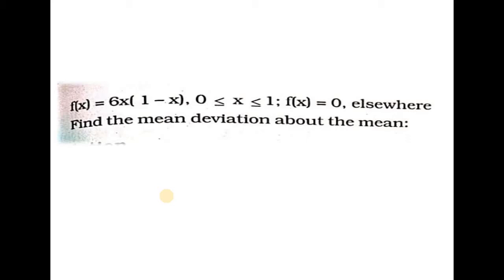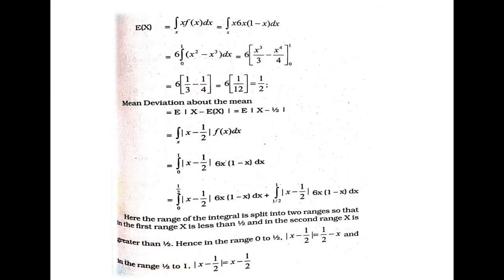f of x is defined from 0 to 1. The value of f of x is 0 outside that range. Now we are going to check the condition: 0 less than or equal to x less than or equal to 1. The question is about E of x — the mean deviation about the mean equation.